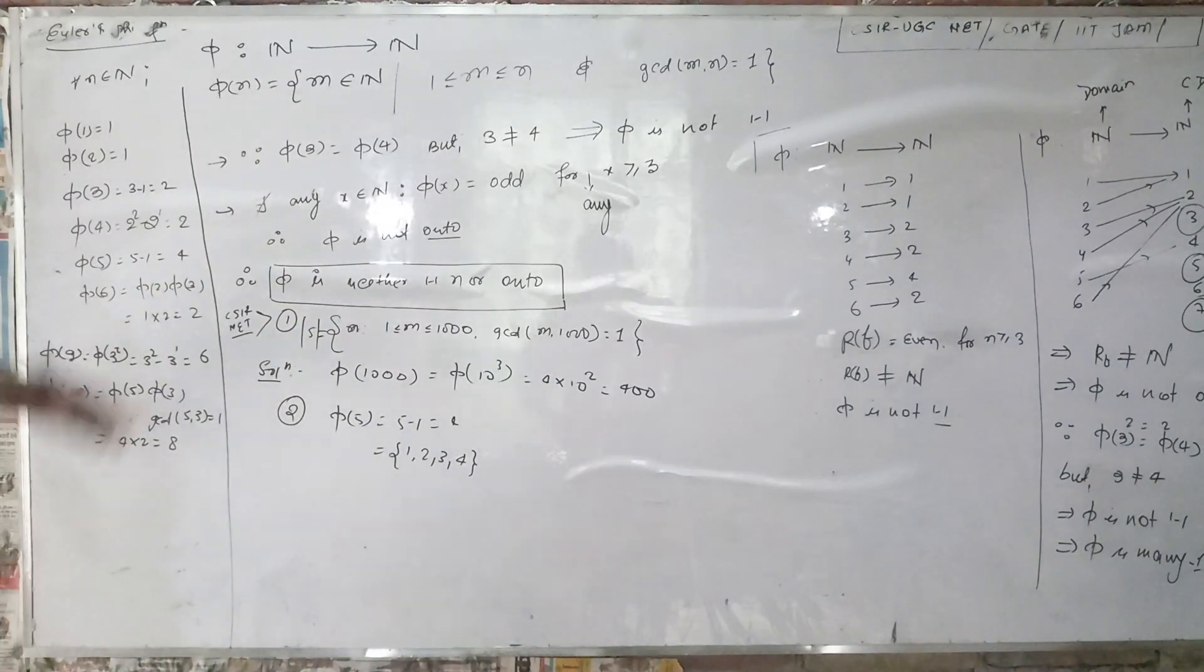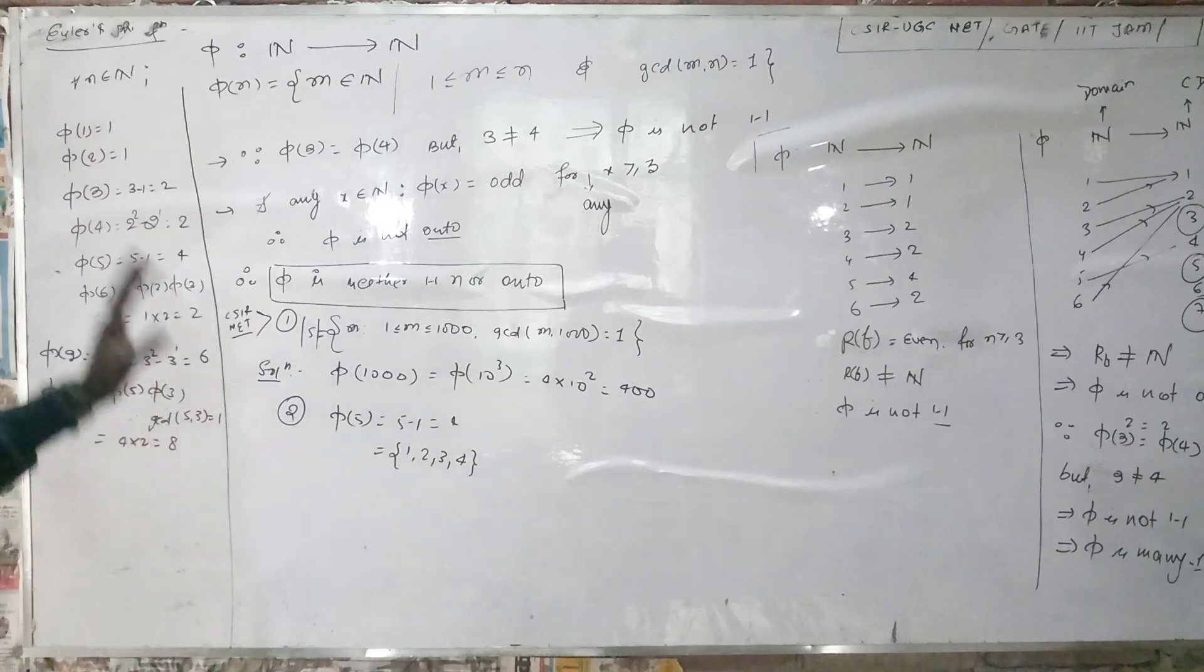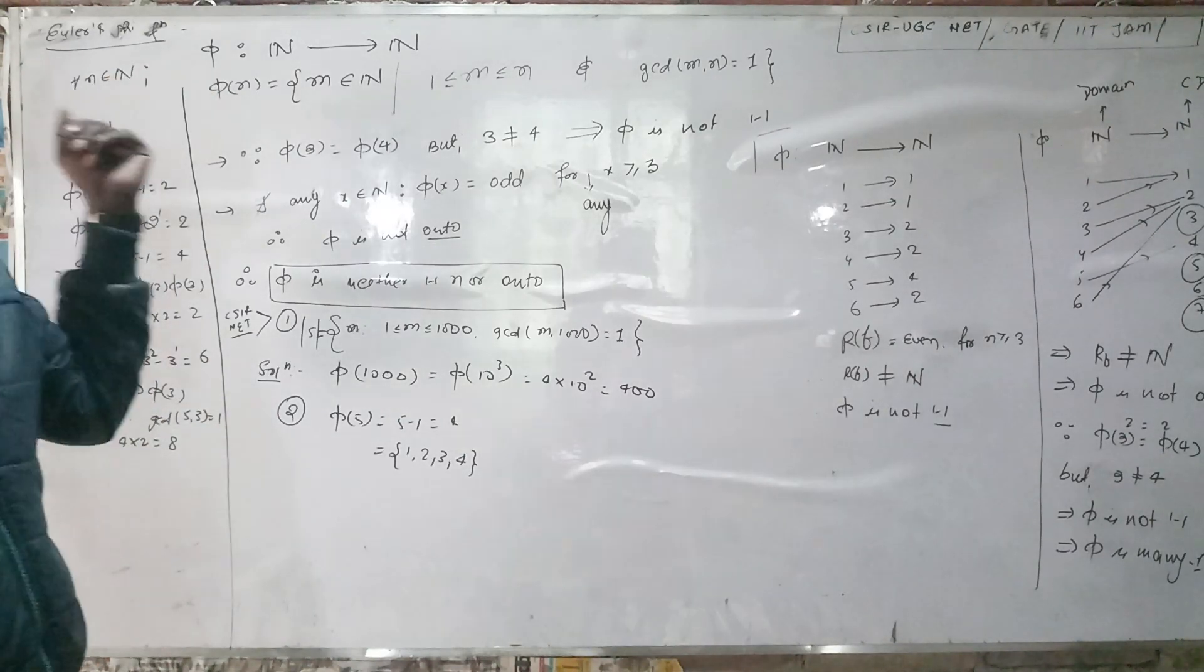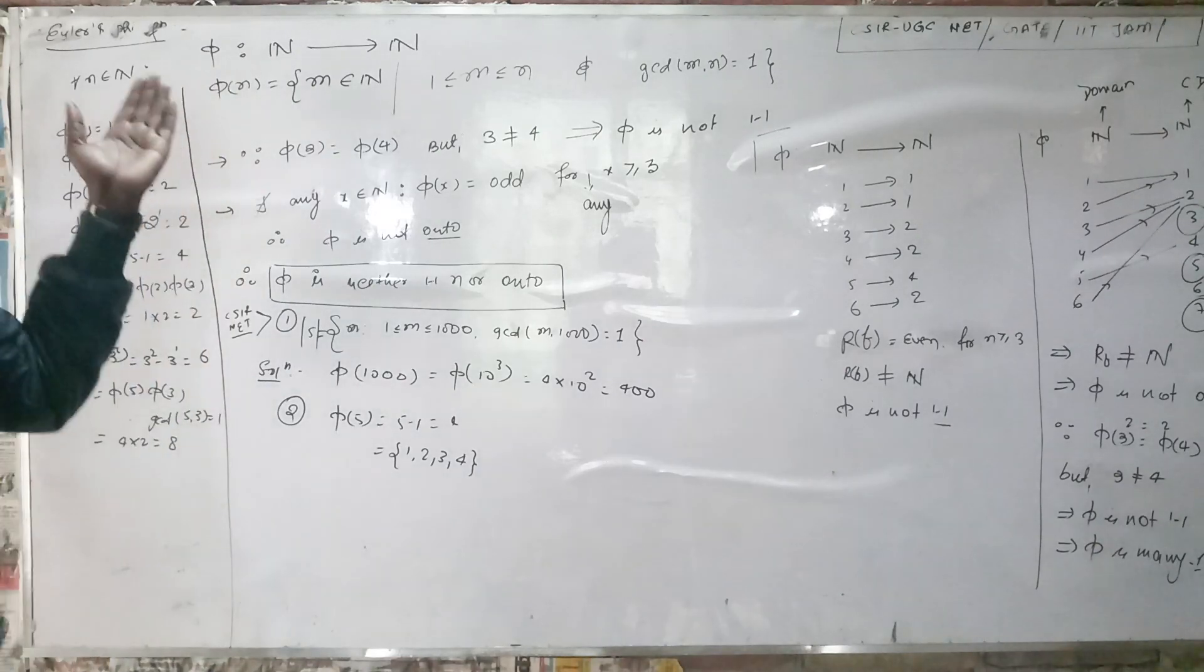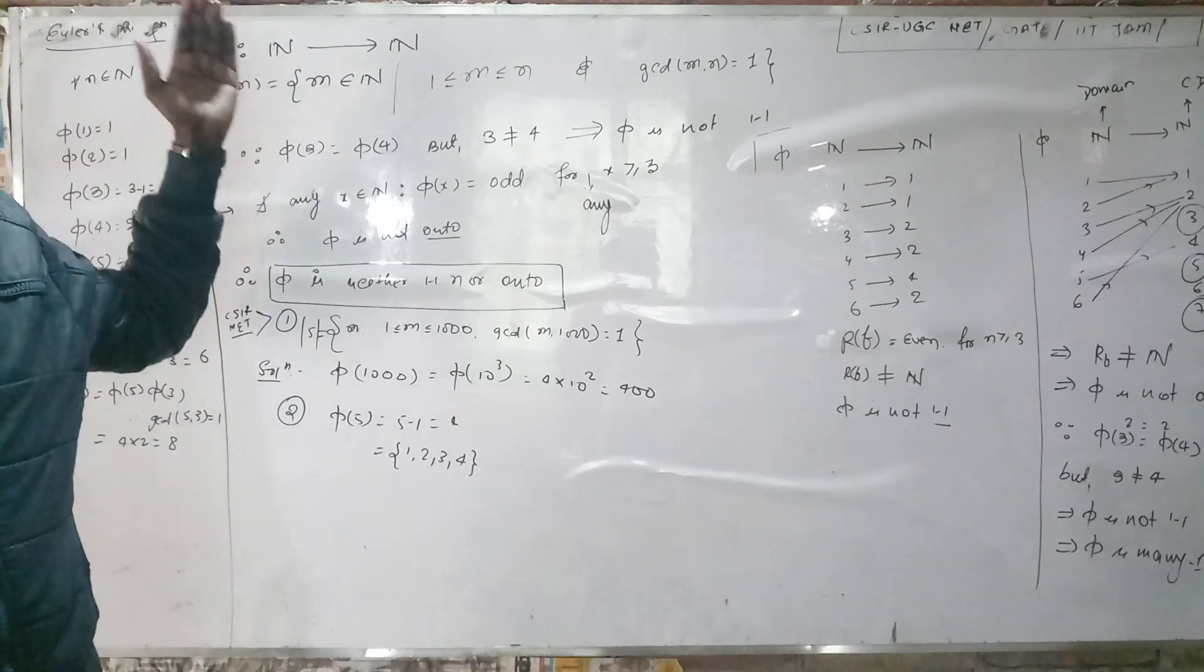We have read in our previous lecture about Euler's phi function. These are the examples and extensions of this function. We discussed that the phi function is defined from natural numbers to natural numbers. That means our domain and codomain are both natural numbers.